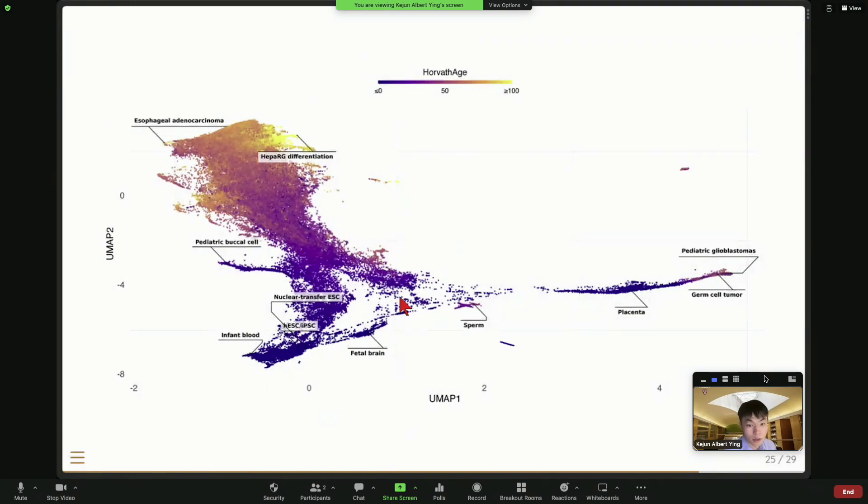So this is what our database looks like. So basically each dot here is a sample and the color is the Horvath age. So you can see this is a UMAP embedding. So like a single cell, but here each dot is a sample. So you can see we have a really diverse range of different kinds of samples. So you can see sperm, I can see this cancer tissue, some iPSC. And the color is the age of the predicted age from Horvath age.